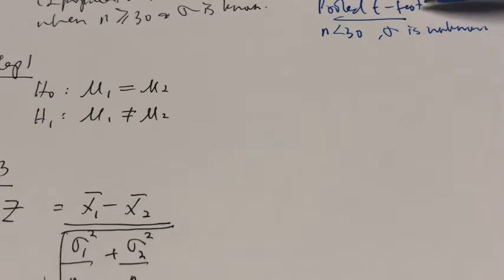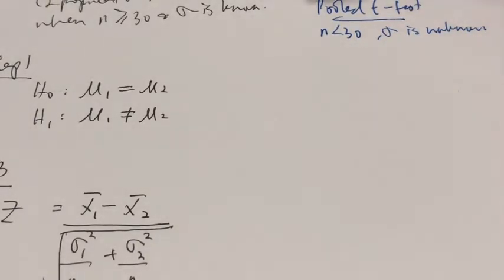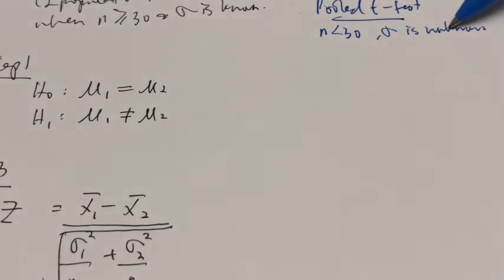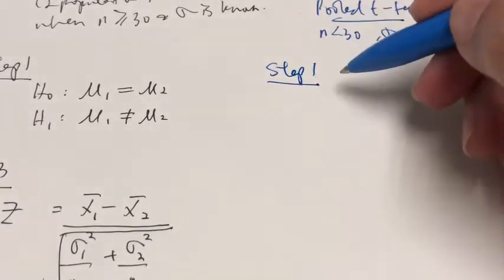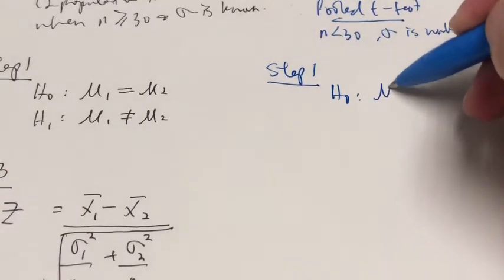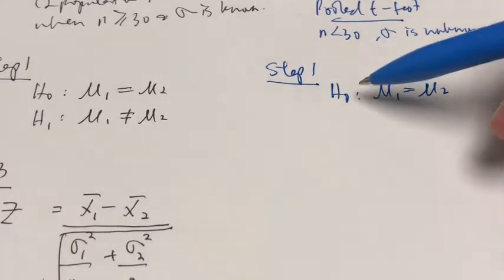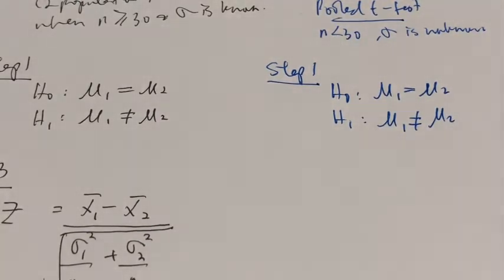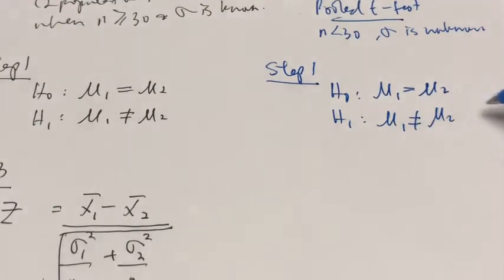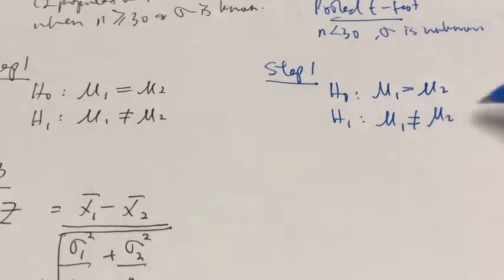Now for the pooled t-test, the objective is very similar — we are finding whether there's a difference or any similarities between two population means. But the difference is now we've got smaller sample sizes and both population standard deviations are not known. Because the objective is the same, step 1 is no different: there is no difference between the two population means — that's our null hypothesis. The alternate is there is a difference, or one population mean is bigger than the other, or smaller than the other.